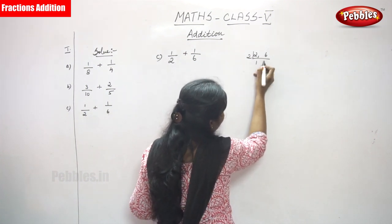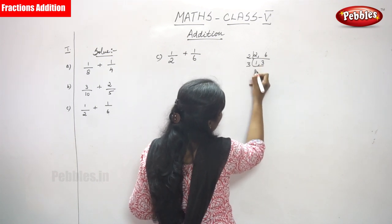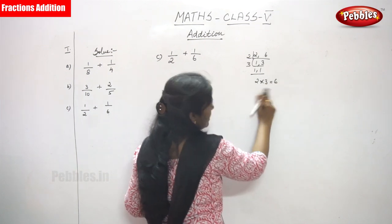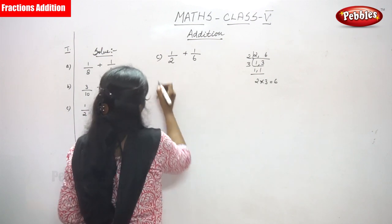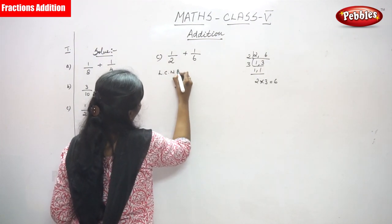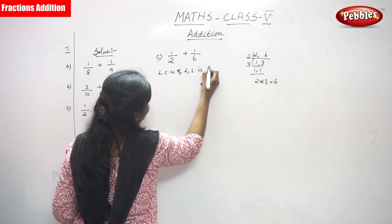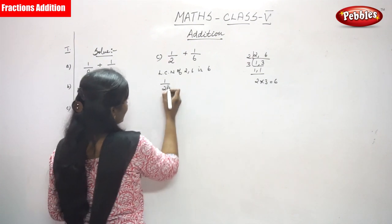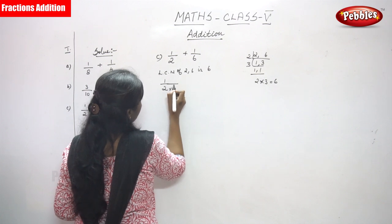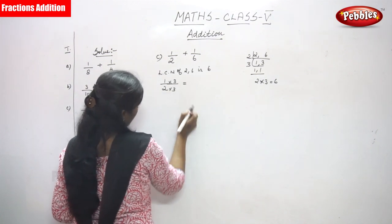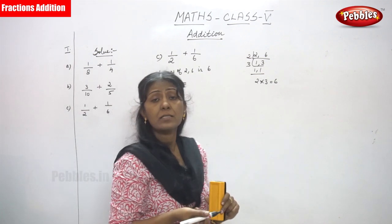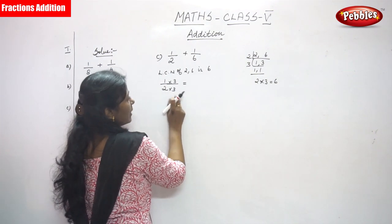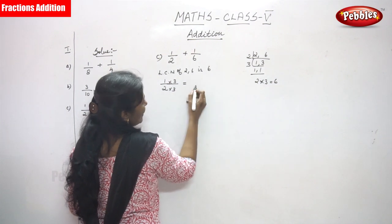2 divided by 2 gives 1, and 6 divided by 2 gives 3. Then I take 3 again — 3 divided by 3 gives 1 and 1. So the LCM is 2 into 3, which gives 6. The lowest common multiple of 2 and 6 is 6.